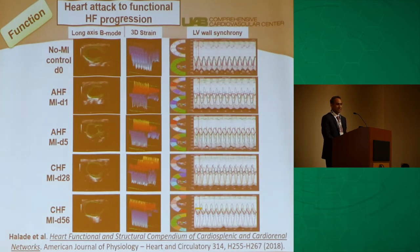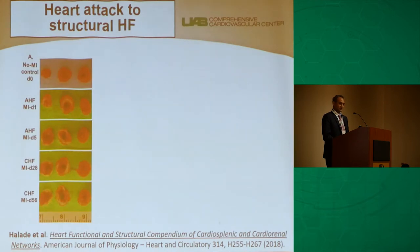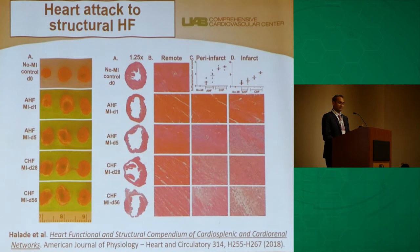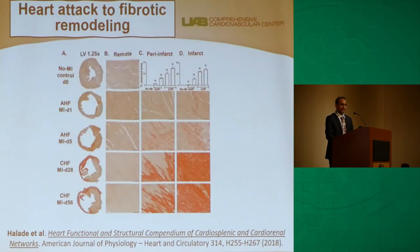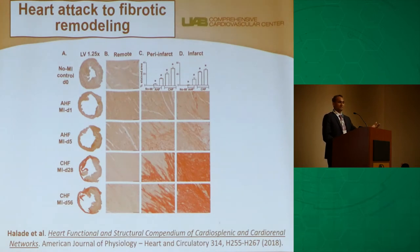Ultrasound confirms the irreversible transition from acute to chronic heart failure, with decreased strain and altered wall synchronicity. Staining further confirms progressive wall thinning; you can see the remote area versus peri-infarct and infarct regions, with profound necrosis and compact fibrotic remodeling beginning from day five onwards. There is no question — this is irreversible chronic heart failure.